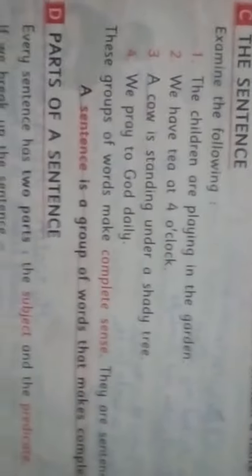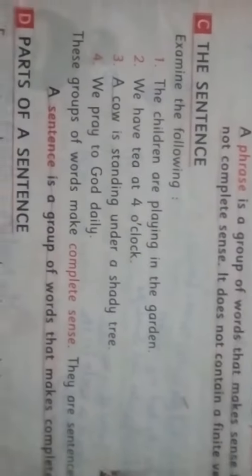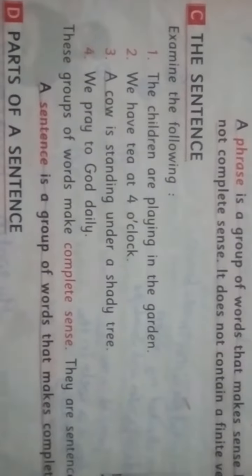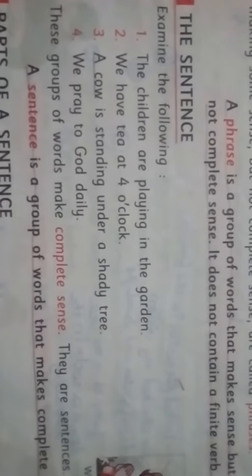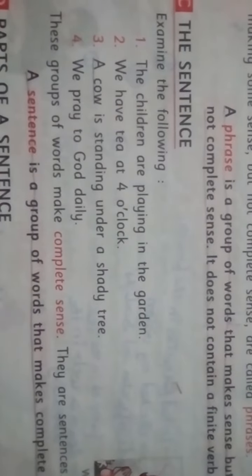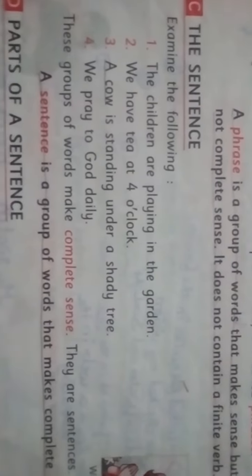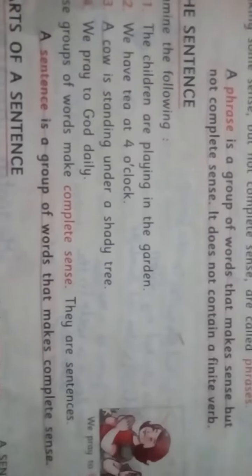Now, what is a sentence? For example: a cow is standing under a shady tree. This group of words makes complete sense. Such groups of words are called sentences. A sentence is a group of words that makes complete sense.